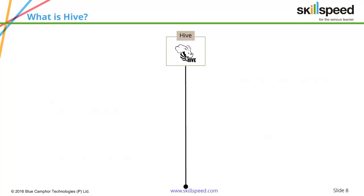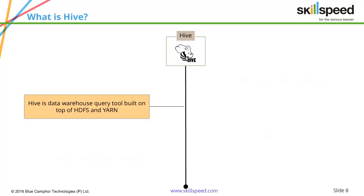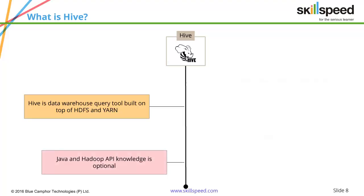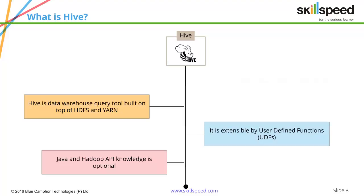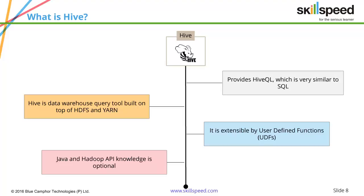Hive is also called the data warehousing system inside Hadoop. It is a data warehouse query tool built on top of Hadoop, and you don't necessarily need Java or Hadoop knowledge. However, if you do have Java knowledge, you can write user-defined functions in Java and use them inside Hive, similar to what we learned in the Pig lesson.